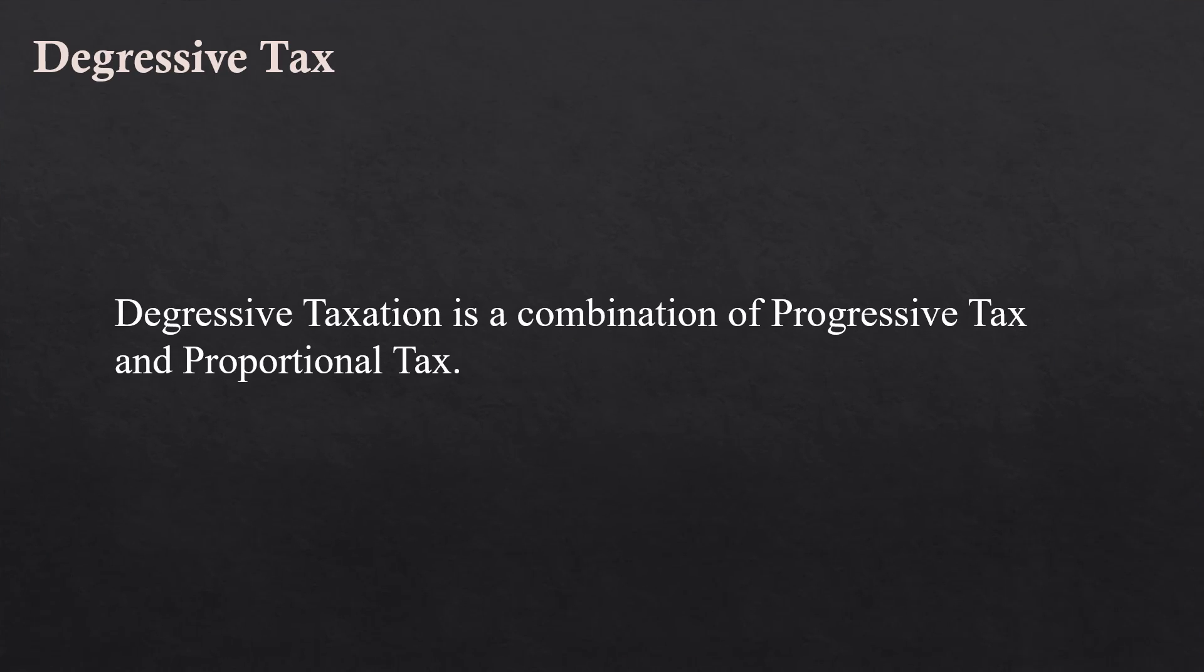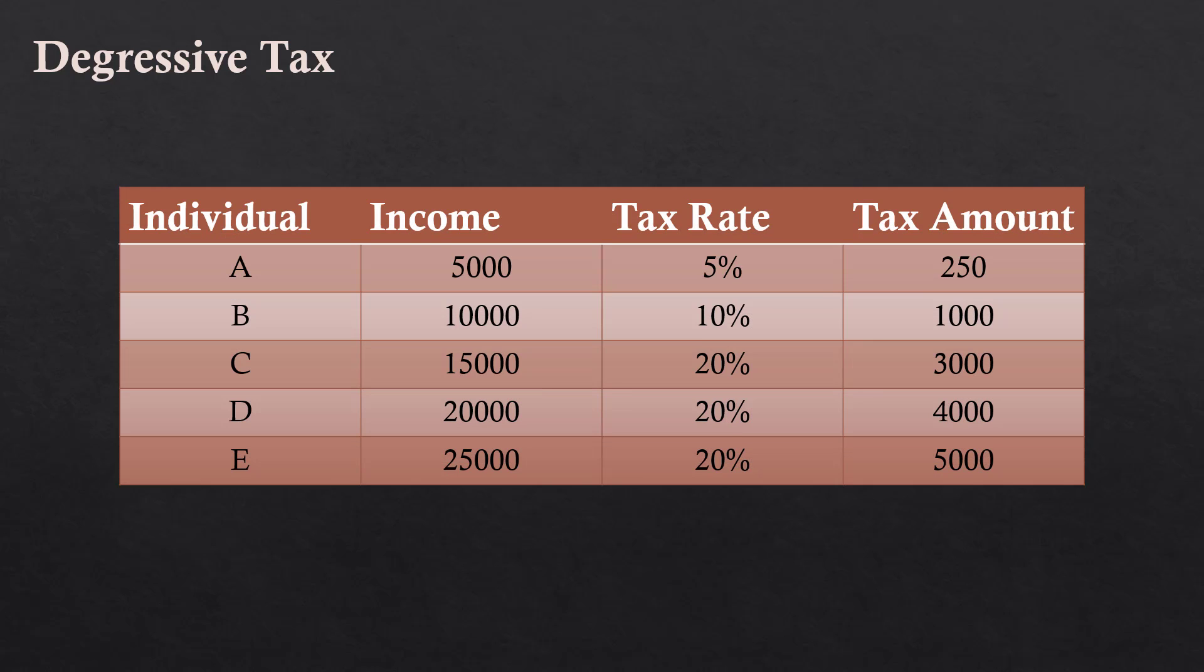Digressive taxation. Digressive taxation is a combination of Progressive Tax and Proportional Tax. Look at this table. To begin with, Progressive taxation is applied. The tax rate increases from 5% to 10% when income increases from Rs. 5000 to Rs. 10,000. After that, proportional tax rate is applied. For income level Rs. 15,000 and above, a uniform tax rate of 20% is applied.